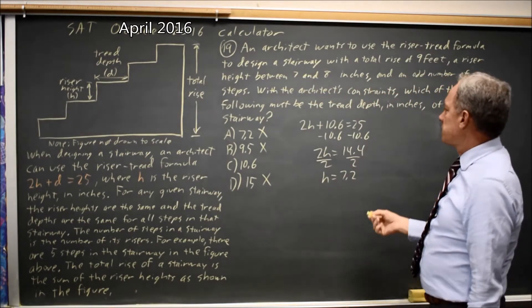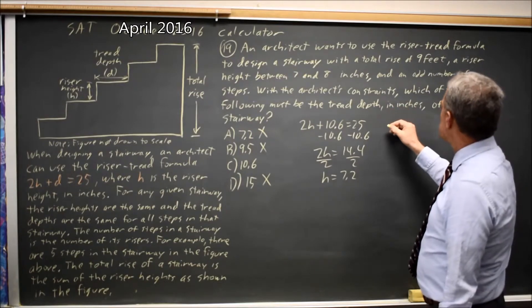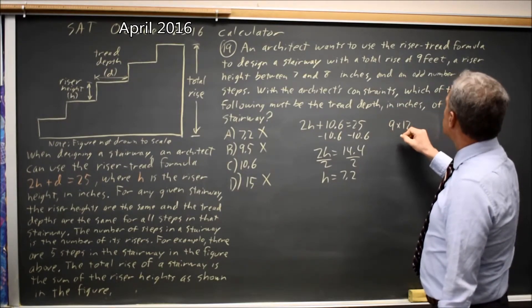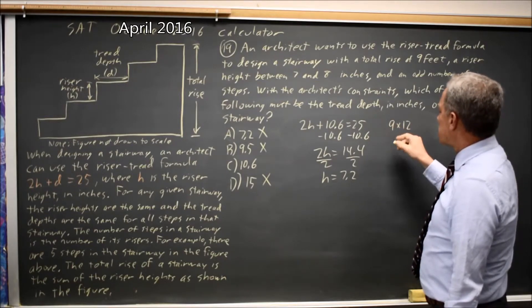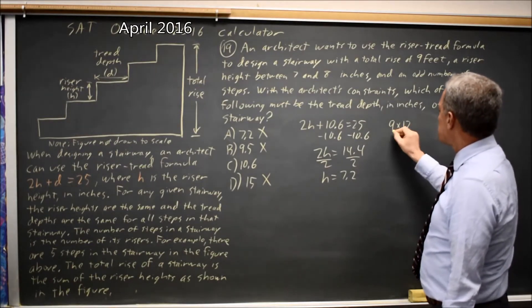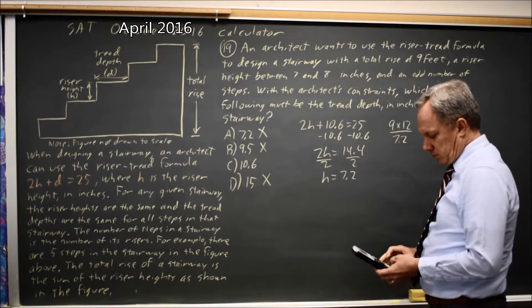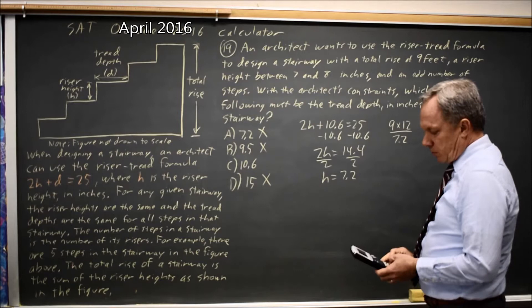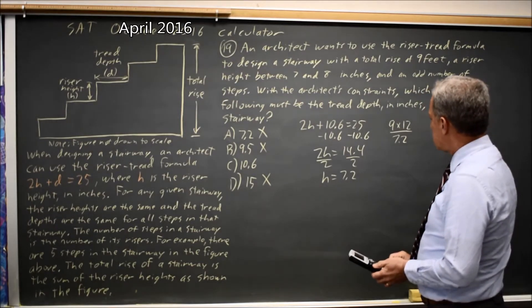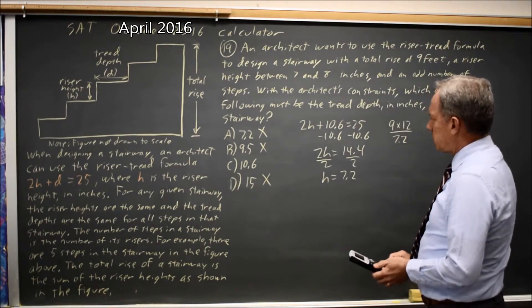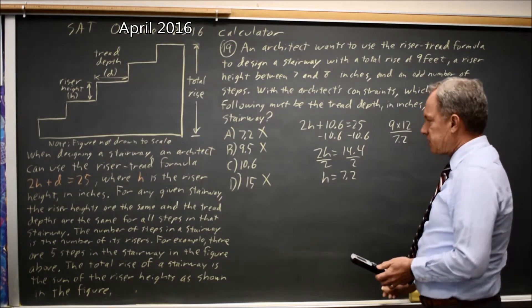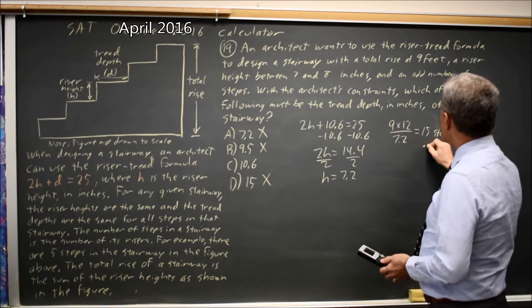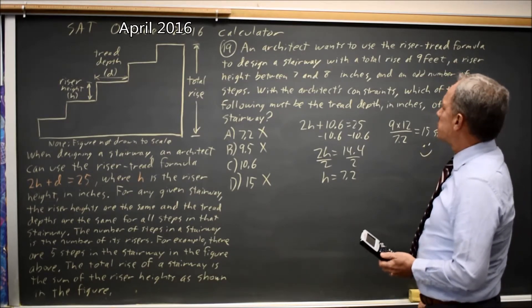Let's check the number of steps. 9 times 12, the height of 9 feet times 12 inches per foot, divided by 7.2, gives me exactly 15 steps.